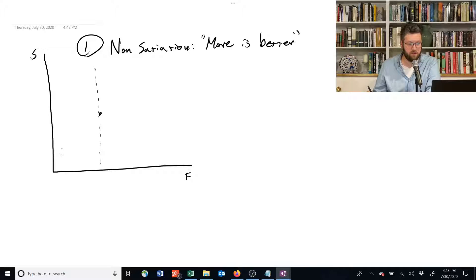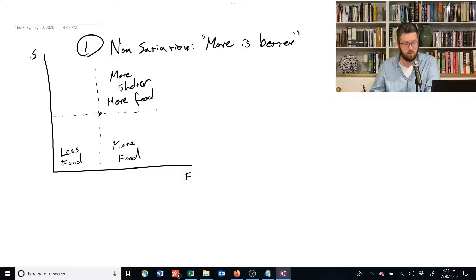And anything over here is less food, and anything on this side of the line is more food. Similarly, we can divide it in this way. Anything above that line is more shelter. And we've also got more food on this side. Anything, and this is still more shelter over here, and anything below this line is less shelter.